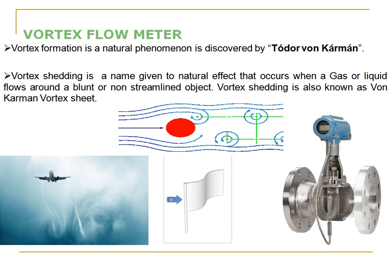A common example is a pole with a flag. The pole itself acts as the bluff body. Whenever air passes around the pole, it causes a series of low and high pressure vortices, and because of this the flag flutters.